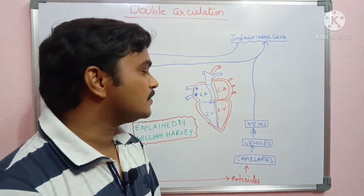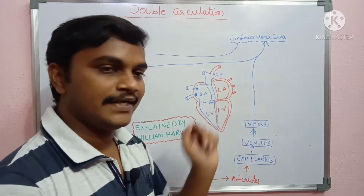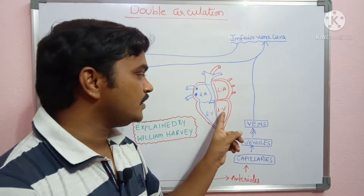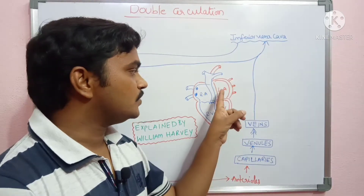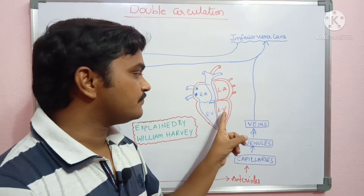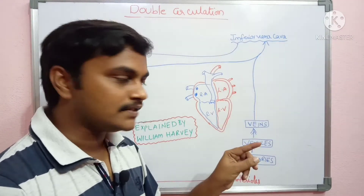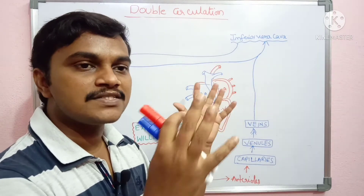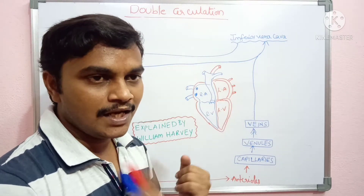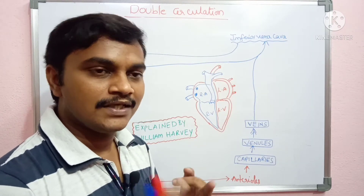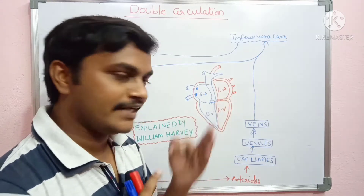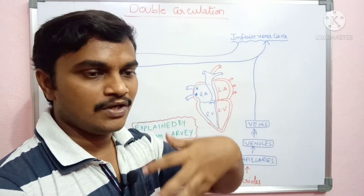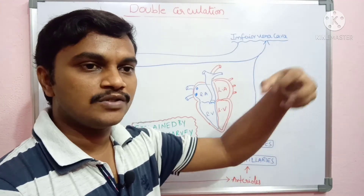That oxygenated blood reaches the left atrium. From the left atrium, blood reaches the left ventricle. So the left atrium and left ventricle carry oxygenated blood. That is systemic circulation, and the body parts are circulated. Lungs, oxygen blood, left ventricle — systemic circulation to body parts.